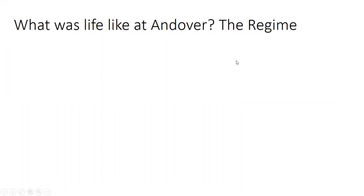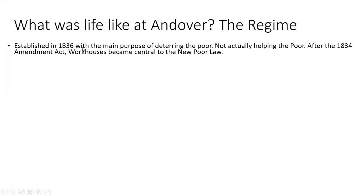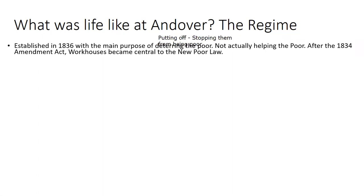The Andover workhouse was established in 1836 and its main purpose was to deter the poor — a keyword meaning to put off or stop people from being poor, which sounds horrendous. The whole concept of a workhouse was a way of punishing the poor. By deterring the poor it was a way of stopping them from being poor, which is why workhouses were also nicknamed 'prisons for the poor.'